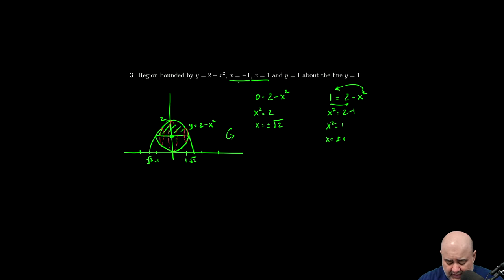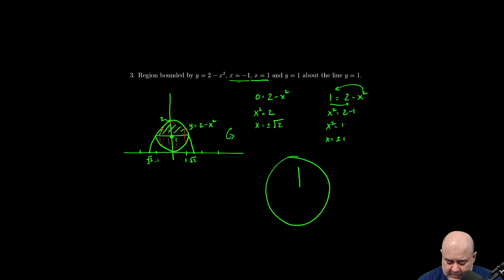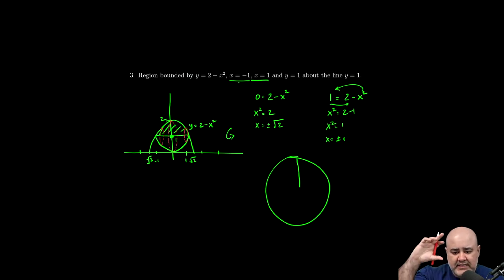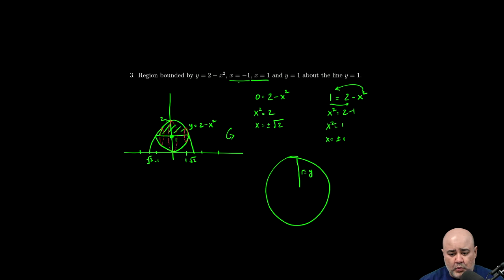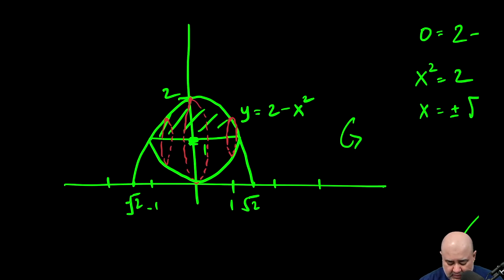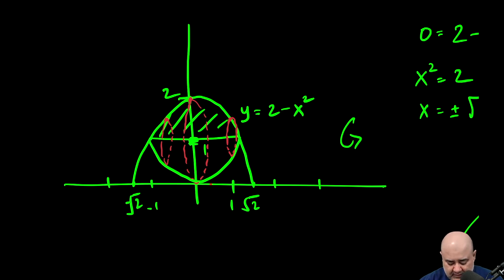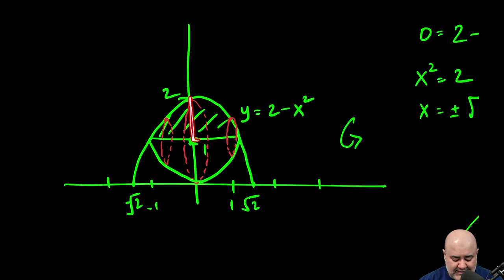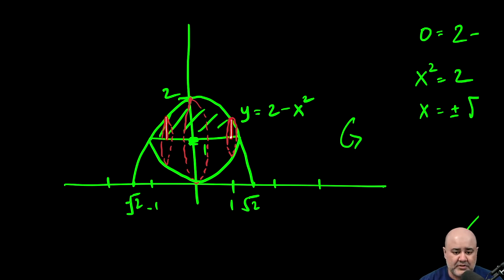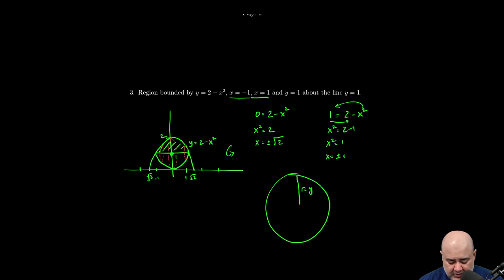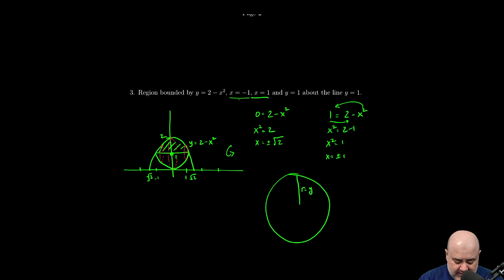Now here we need to be a little more careful than we have been in the past. My representative slice is still going to be a vertical distance. If I'm slicing something vertically, the radius of that cross-section will be a vertical distance — the radius is going to be some y value. But we have to be careful: the y value here is not the distance from the x-axis to the height of the function.